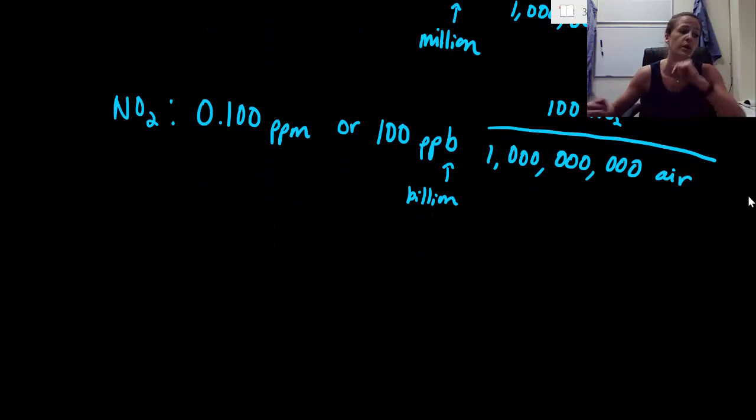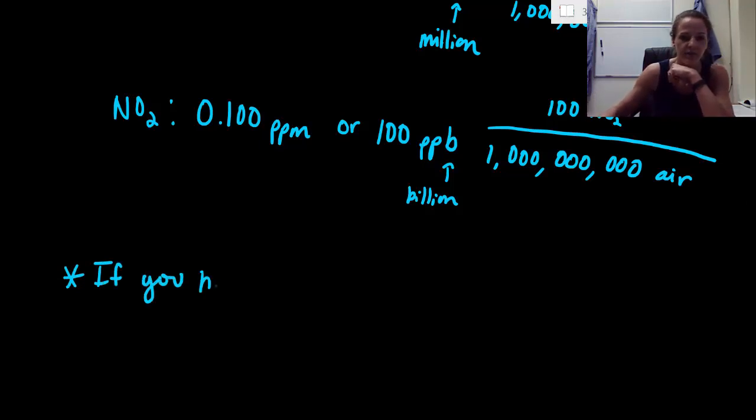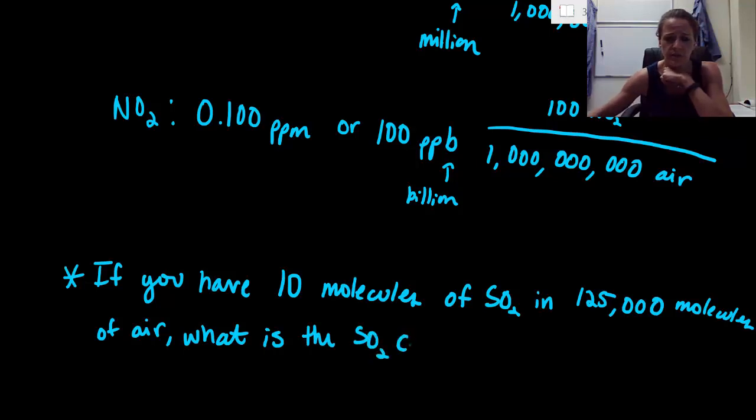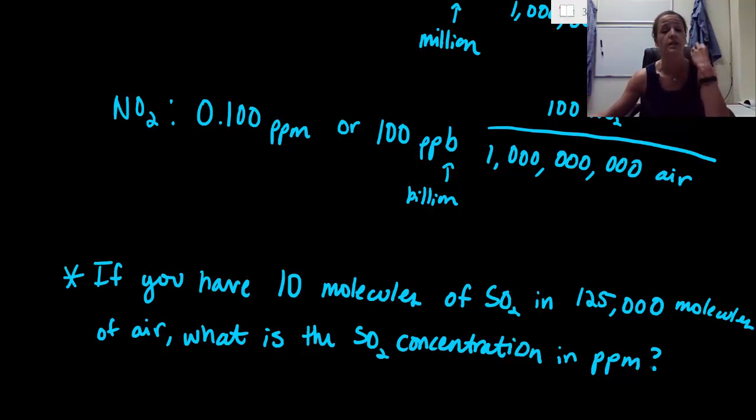So in order to do this, let's go through a quick problem to make sure we're all on the same page. First things first, if you have 10 molecules of SO2 in 125,000 molecules of air, what is the SO2 concentration in ppm? So I want you to take a second and try to solve this and come up with an actual answer. I want a number.